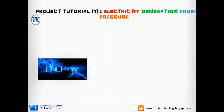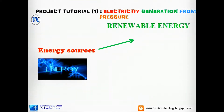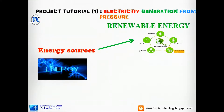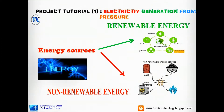Energy is divided into two forms: renewable energy and non-renewable energy. Renewable energies include solar, wind, wave, geothermal, etc. Non-renewable energy includes fossil fuels, coal, nuclear, and natural gas. Non-renewable energy sources are limited — we can't use them again and again.